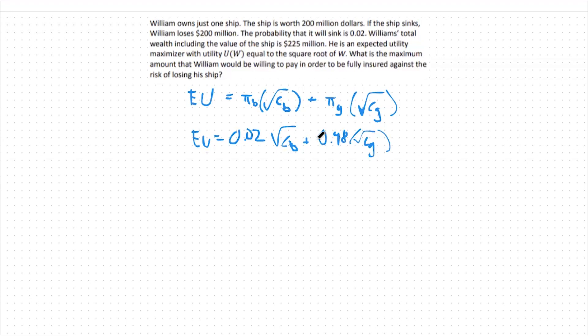From there, we can plug in our payouts that we should expect to see in the no insurance case. Under no insurance, in the bad state, I will be consuming only $25 million. The other $200 million is lost in the ship sinking. This means I should say 0.02 times the square root of 25, and we'll talk about this in millions of terms.